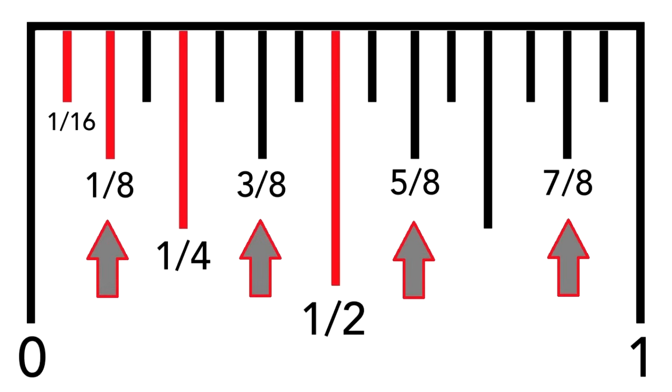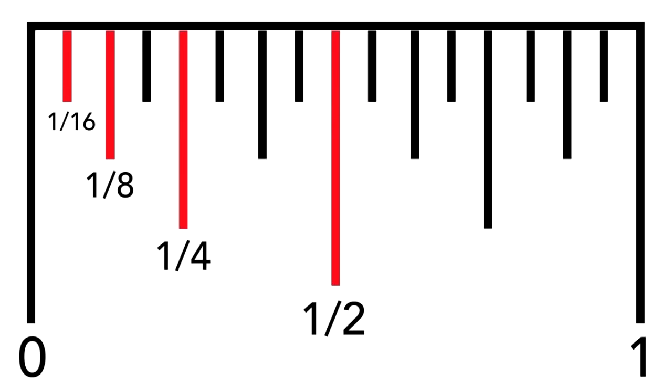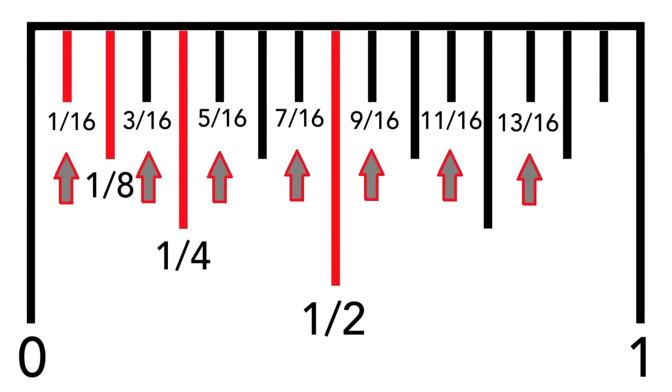You do the exact same thing when you're looking for a 16th. Find 1 16th and count the odd numbers on those lines to get there. 1, 3, 5, 7, 9, 11, 13, 15.